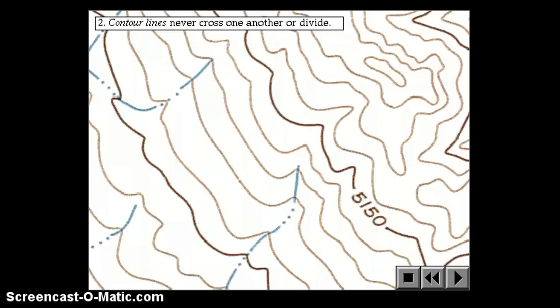Contour lines can never cross or divide. Now, if you think about it, this rule makes sense because if one contour line is always the exact same elevation. So, let's say this one is 5150 above mean sea level. And the next one is a different elevation, like 5160 above mean sea level. Well, then how could they cross? If they were touching the same place, that would mean that the elevation was both 5150 and 5160 feet above sea level at the same time. And that's not possible.